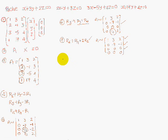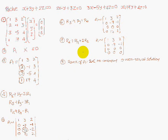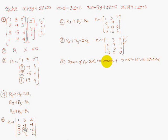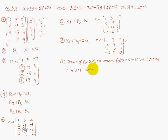From the reduced echelon form, the rank of A is equal to 2, which is less than the number of unknowns, which is 3. Therefore, the system has a non-trivial solution. The number of linearly independent solutions is N minus R equals 3 minus 2 equals 1. Let Z equals K be the free variable solution.